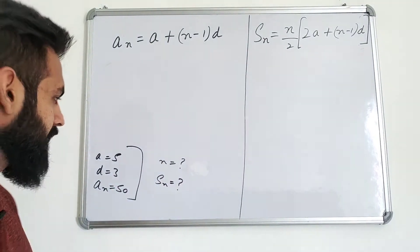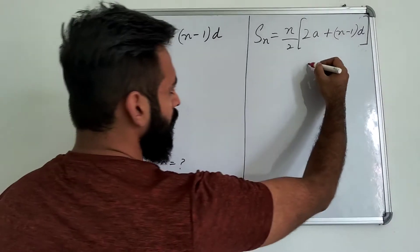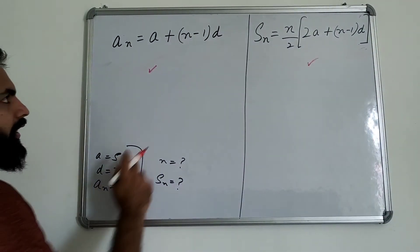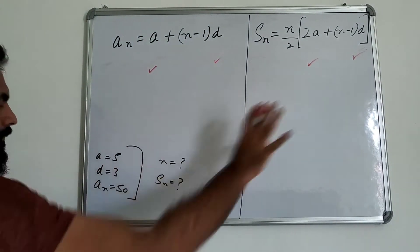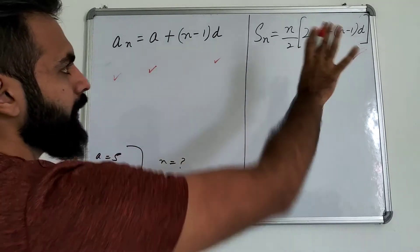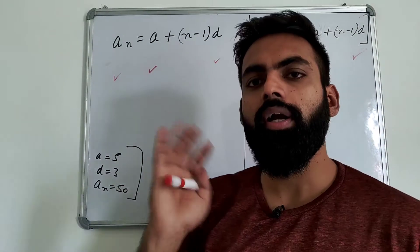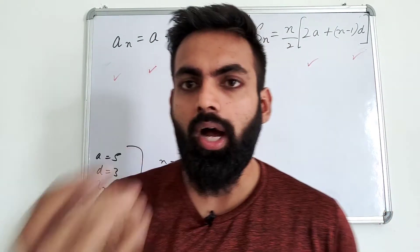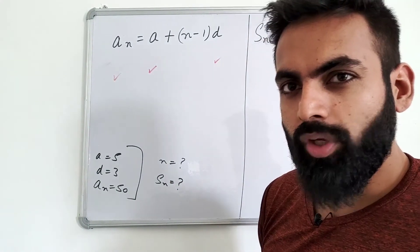Okay, this is the first question. If a is 5, we can add value here and here. And here we can add d is 3. See, d here is present and d here is present. And where is an present? An is 50, an here will come. So wherever you have a, d, and nth term, I have ticked it. Meaning here we can substitute these values. Now, if I ask you how to take n and Sn, these two equations?